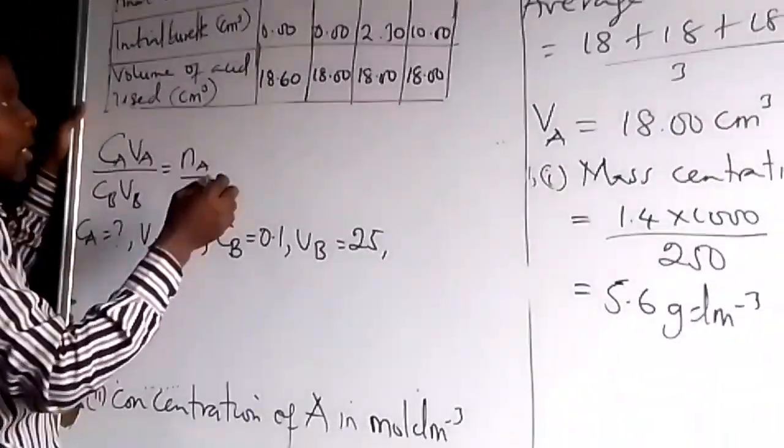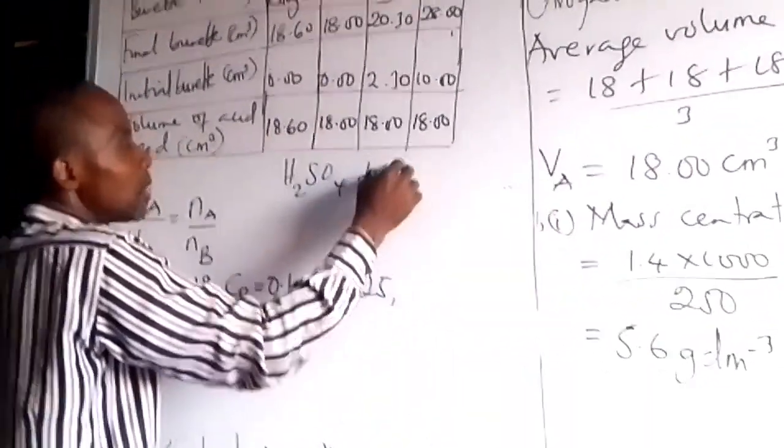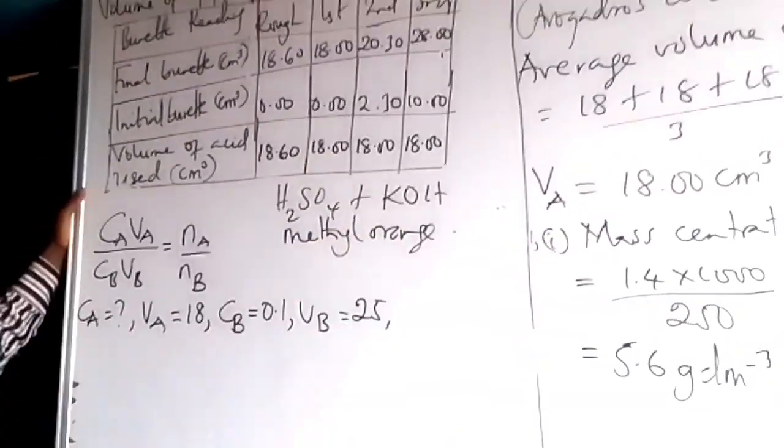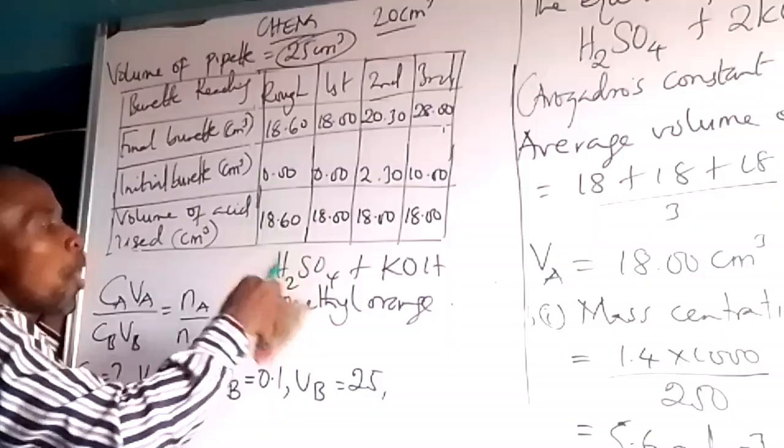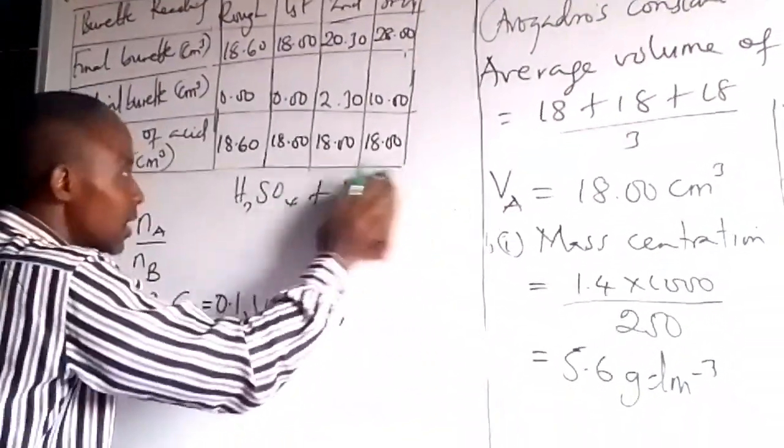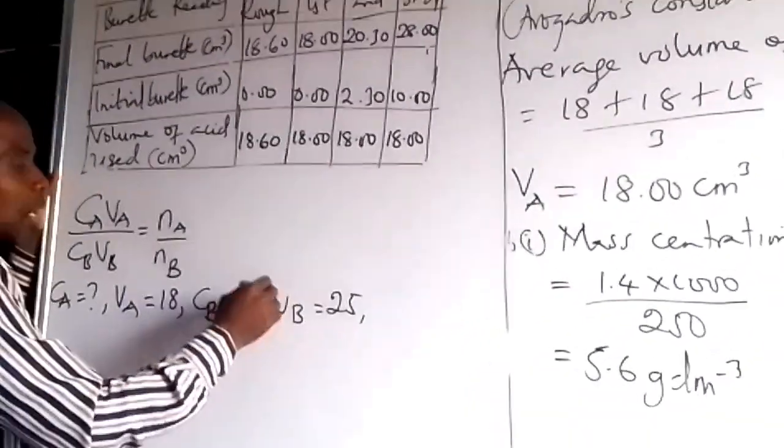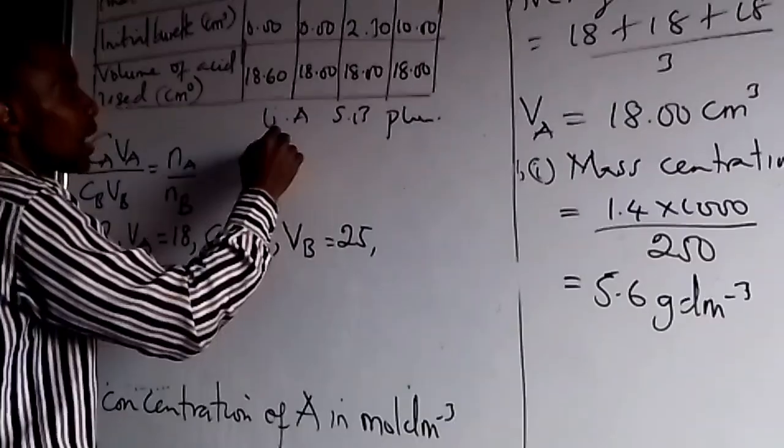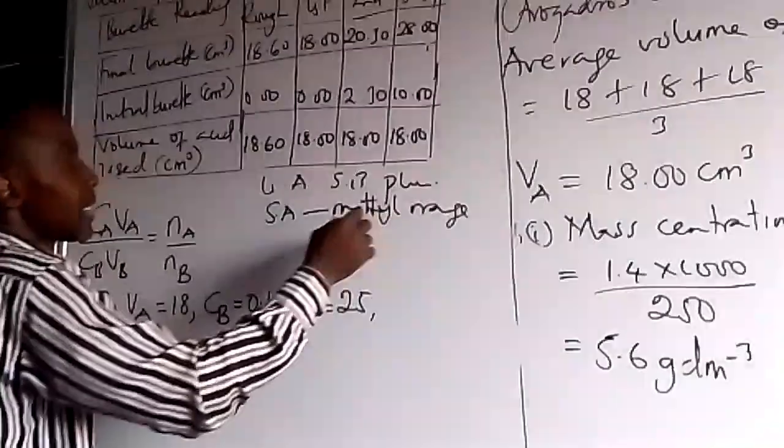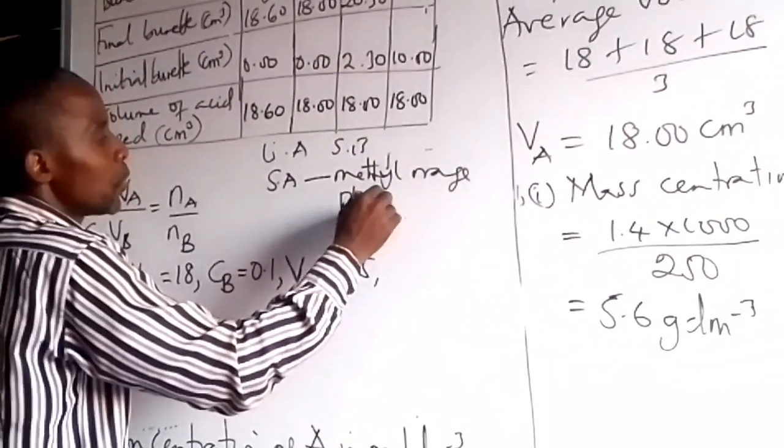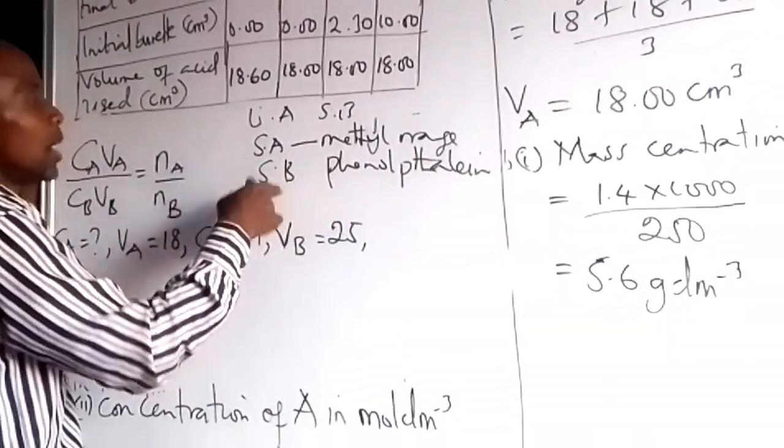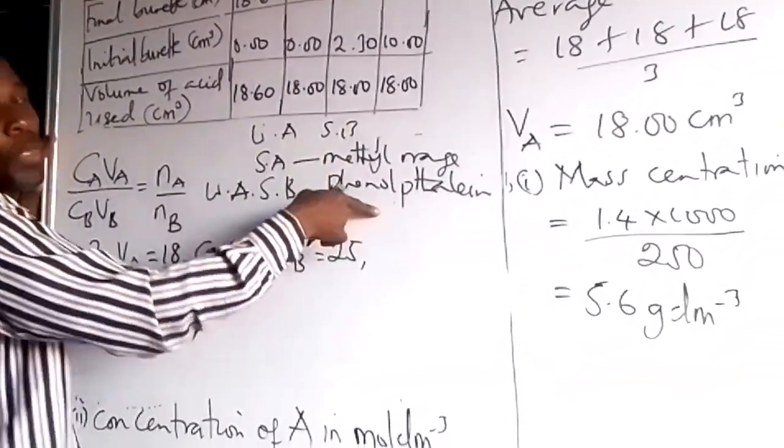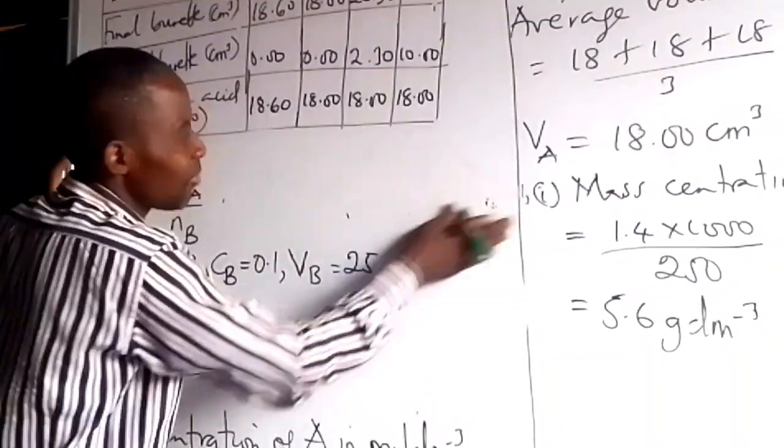The suitable indicator, if I forget. This is a relation between strong acid and strong base. So the suitable indicator is what? Methyl orange. Use methyl orange as suitable because it's strong acid and strong base. They may ask you what is the suitable indicator and give a reason. If it is weak acid, strong base, you use phenolphthalein. Methyl orange for strong acid. Phenolphthalein for strong base when there is weak acid.